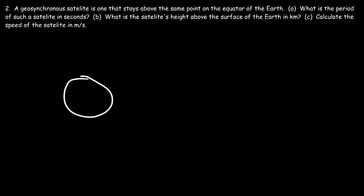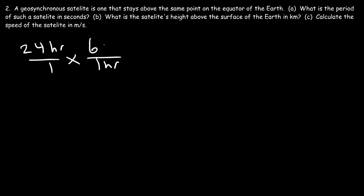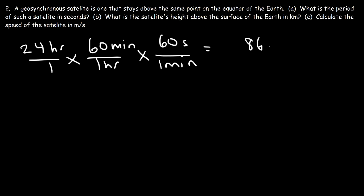So what is the period of the geosynchronous satellite? As mentioned, it takes 24 hours for the Earth to rotate on its own axis, so the geosynchronous satellite takes 24 hours to revolve around the Earth. Converting to seconds: one hour is 60 minutes and one minute is 60 seconds, so it's 24 times 60 times 60, which equals 86,400 seconds. That's the period.